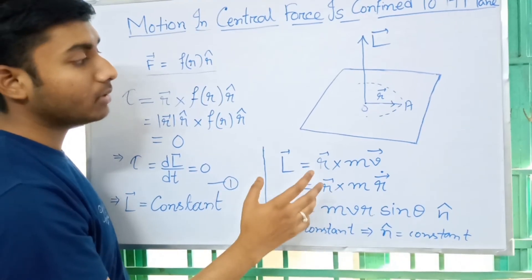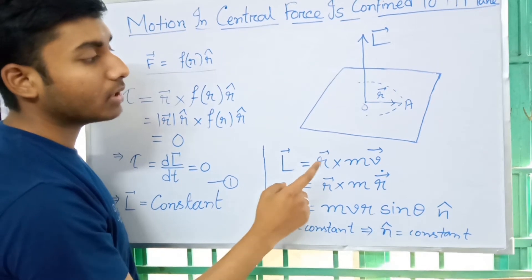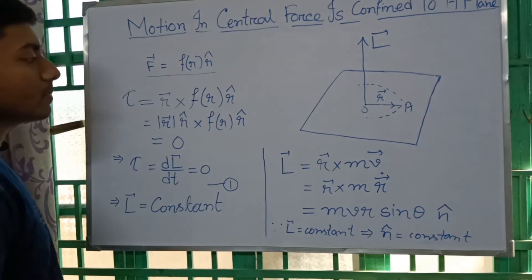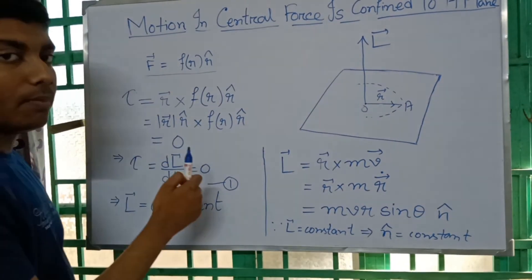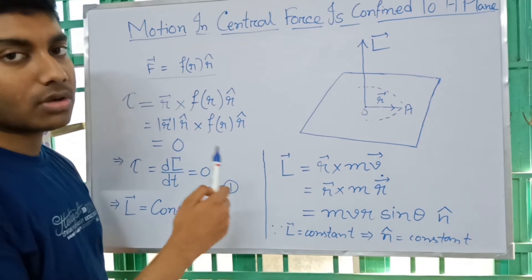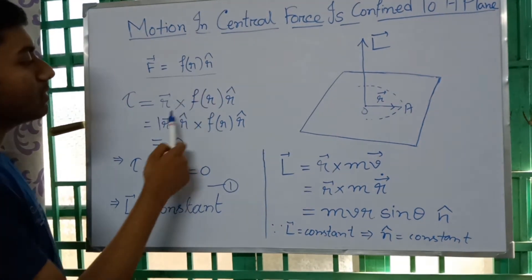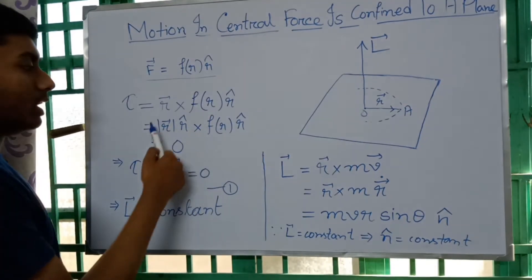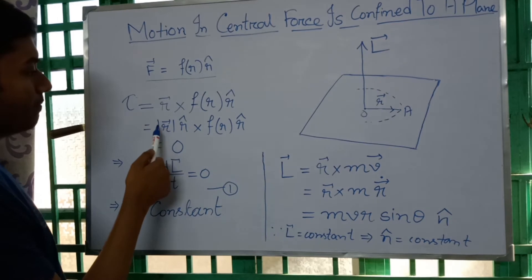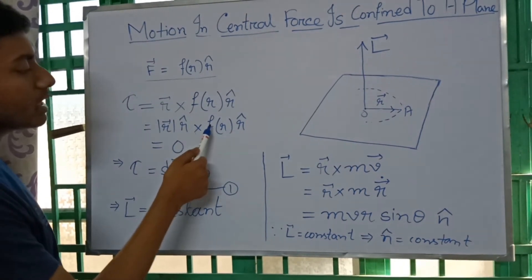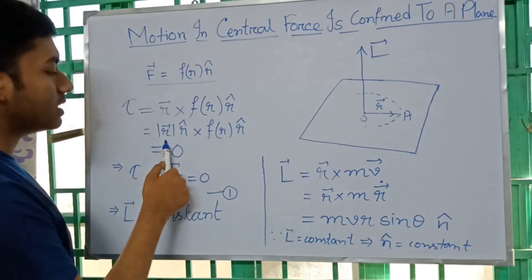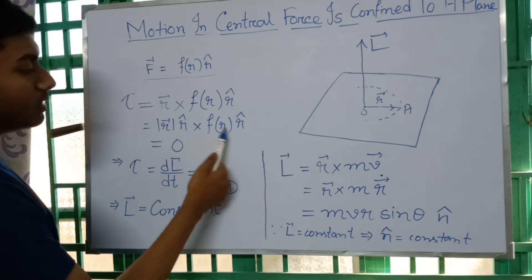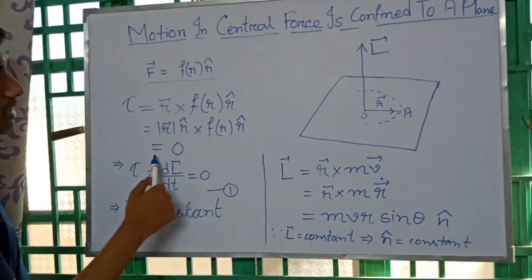We have to calculate the torque on the particle at point A. So τ equals R cross F(R) · R-cap. As we know τ equals R cross F, and here F equals F(R) · R-cap. So τ equals R-vector cross F(R) · R-cap. You can see this becomes R · R-cap, and the direction of these two vectors is the same, so the cross product will be zero.